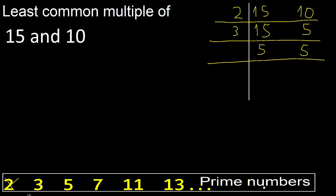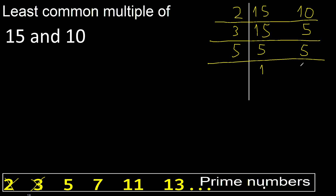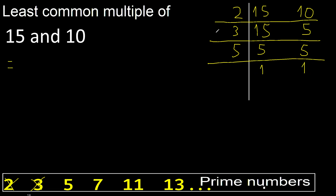Cannot be divided by 3. Can be divided by 5. 5 divided by 5 is 1. 5 divided by 5 is 1. 1, 1. Finish it.